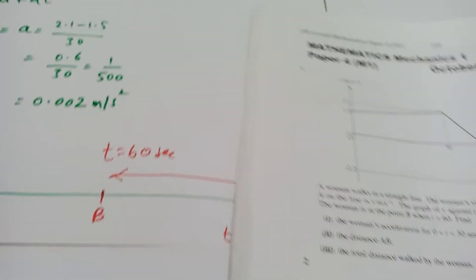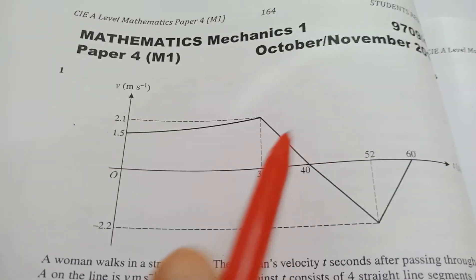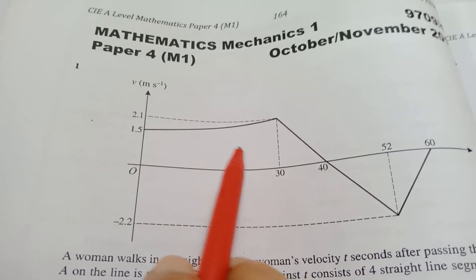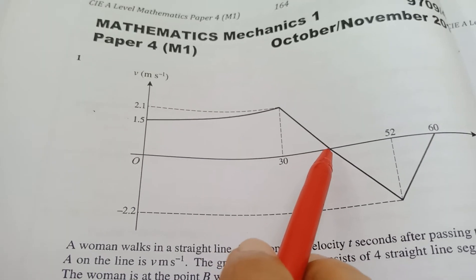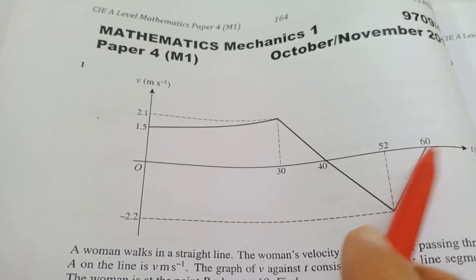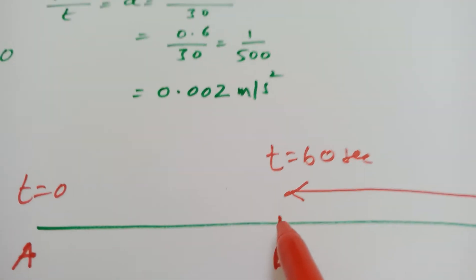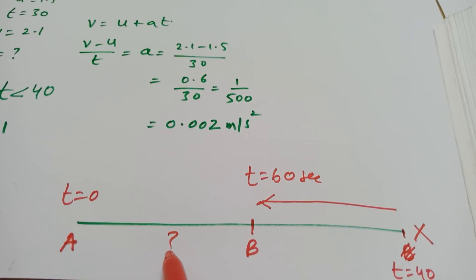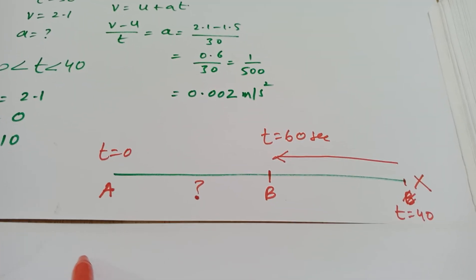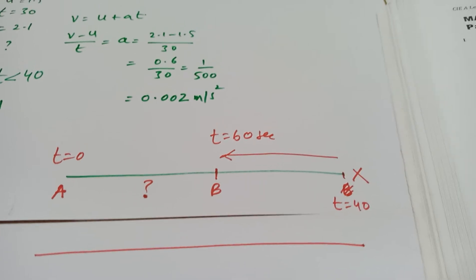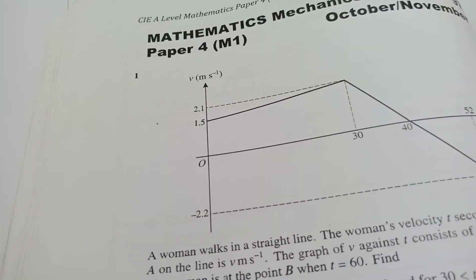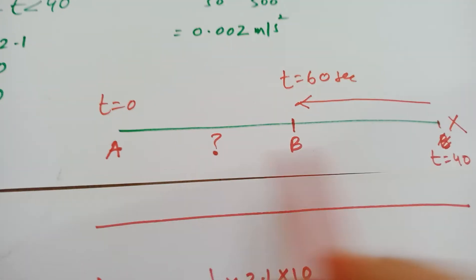When the time was 40, the woman turned and moved backwards towards point A. She must have reached point B when the time is 60 seconds. So the woman went from A to a turning point — let me call it X — in the first 40 seconds, and then from X back towards B in the next 20 seconds. The graph is on both sides of the time axis, meaning she went forward for 40 seconds then moved backwards for 20 seconds, ending at point B.